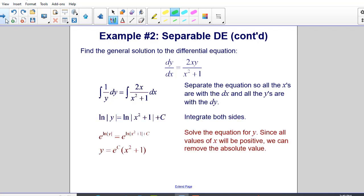Solve the equation for y. Since all the values of x will be positive we can remove the absolute value. So I use the natural log of y as an exponent of e, and e to the natural log of y is y. And on this side I have e to the natural log of x squared plus one plus c. Using my rules of exponents leaves me with e to the c power times x squared plus one.